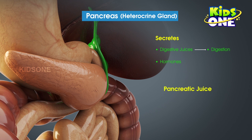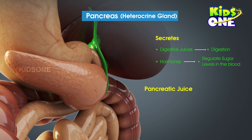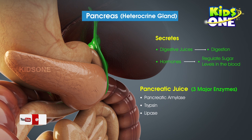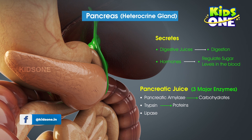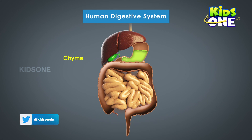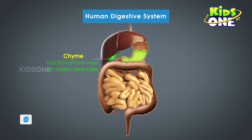The pancreas secretes pancreatic juices and also hormones which help in regulating sugar levels in the blood. The pancreatic juice is a mixture of three major enzymes: pancreatic amylase, trypsin, and lipase. Pancreatic amylase helps in the digestion of carbohydrates, trypsin breaks down proteins, and lipase helps in the complete breakdown of fats. The chyme — the pulpy liquid passed down from the gastric glands — mixed with bile, now gets mixed with pancreatic juices, marking the completion of digestion.